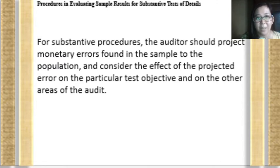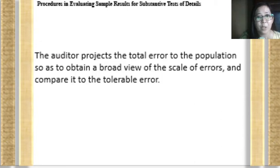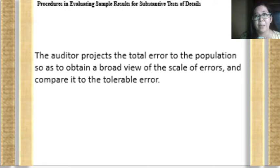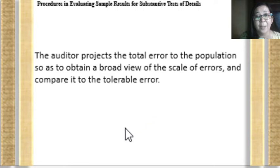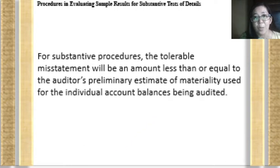Substantive procedures are concerned with monetary values. The samples taken from the population are tested and evaluated, and the results are inferred back to the population. The auditor projects the total error to the population to obtain a broader view of the scale of errors. These projected errors are then compared to the tolerable error to determine if there is a high or low risk of material misstatement for further substantive procedures.